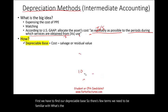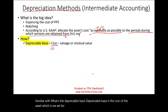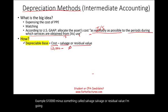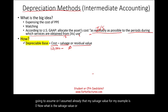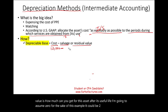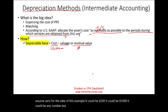The depreciable base is the cost of the asset — which is, for our example, $10,000 — minus something called salvage or residual value. The salvage value or residual value is how much you can get for this asset after its useful life. I assumed zero for this example, but it could be $200, $1,000, or any number.